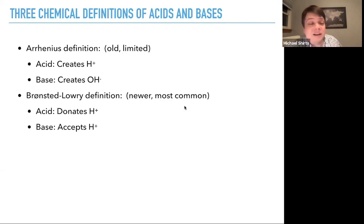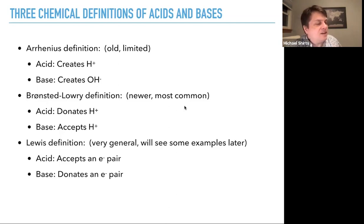The Lewis definition is very general. We'll see some examples later, but we're not going to cover it in this lecture since it covers some cases that are not quite as simple. An acid is something that accepts an electron pair and a base is something that donates an electron pair. That could be useful in some circumstances, although not what we're going to be covering in the next couple of lectures.